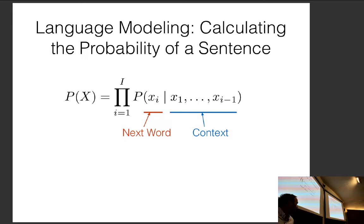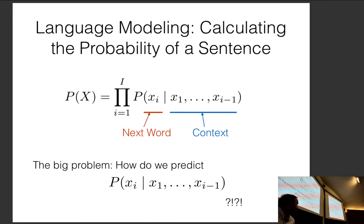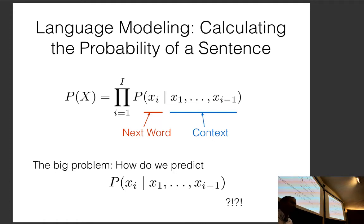An autoregressive model predicts the next words based on predictions made for previous words. The reason we decompose this way is that predicting probability over a whole sentence is intractable — there are an exponential or infinite number of sentences in English. However, if we limit our vocabulary to 40,000 words or predict the next character from Unicode one at a time, this becomes a fixed-size classification problem that is relatively easy to solve.